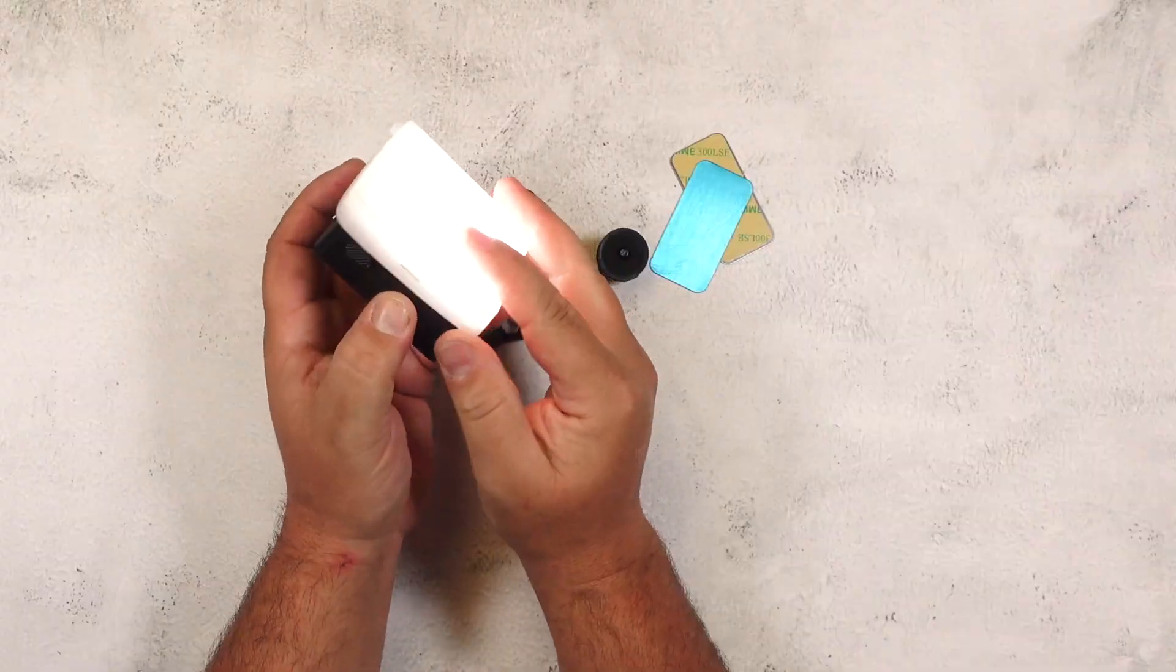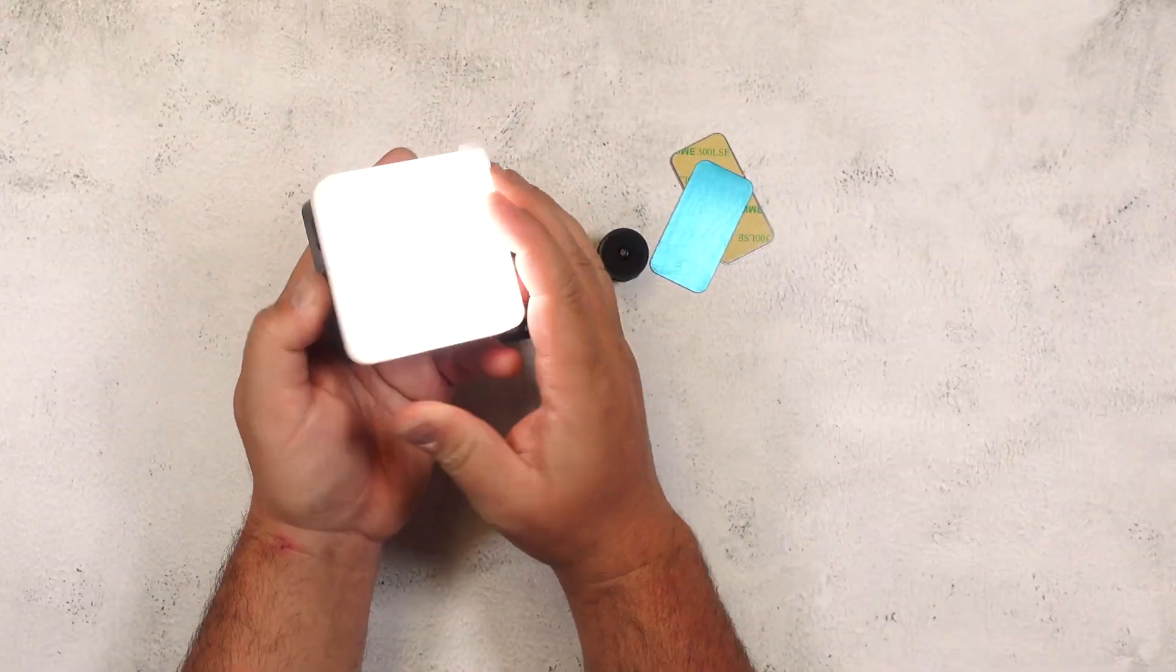If the light is a bit harsh for your skin they do include this diffuser which fits on nicely and just makes it a little bit softer.